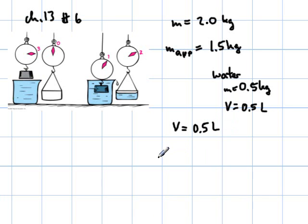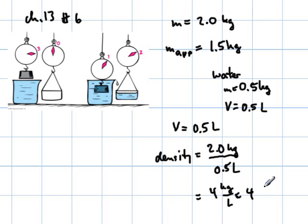And therefore the density is going to be the mass, the true mass of the object, 2.0 kilograms, divided by its volume of 0.5 liters, which comes out to 4 kilograms per liter or 4 grams per cubic centimeter.